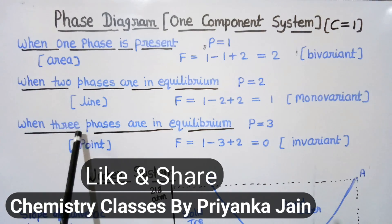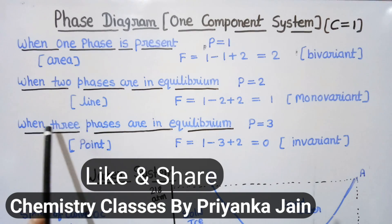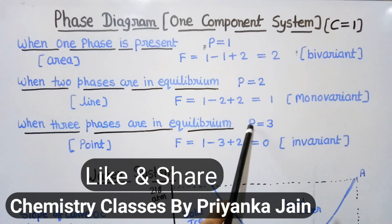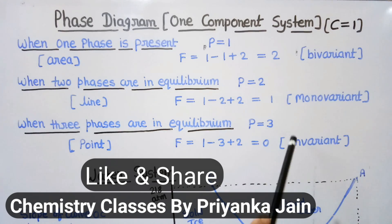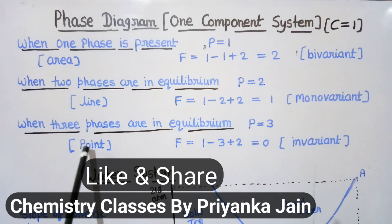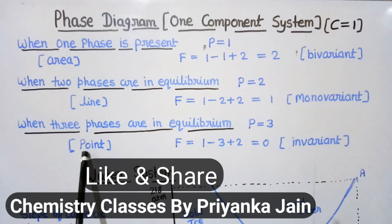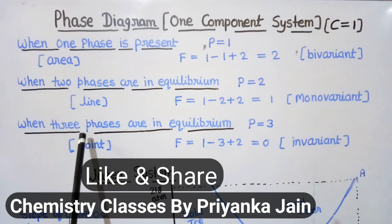Now the third condition: when three phases are in equilibrium — liquid, vapor, and solid state all present simultaneously — the number of phases is 3, so the degree of freedom is 0. The system is invariant, and this equilibrium is shown by a point called the triple point. This triple point occurs at a particular temperature and a particular pressure only. Any deviation in temperature or pressure leaves only two phases present.